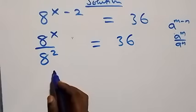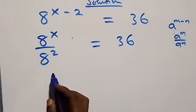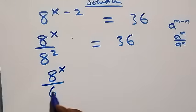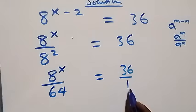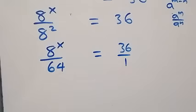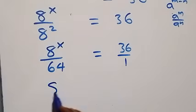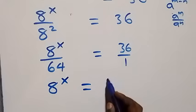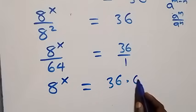Next step, we can write this as 8 raised to power x over 8 squared, which is 64, equals 36 over 1. When we cross multiply, 8 raised to power x times 1 gives us 8 raised to power x, then equals 36 times 64.